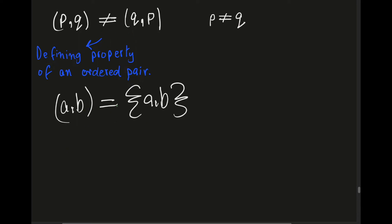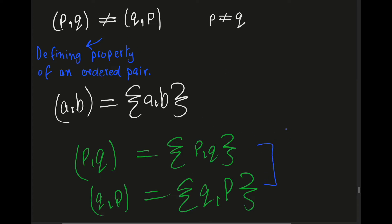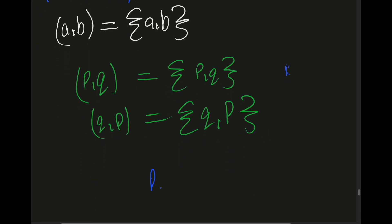We can prove that by substituting p and q into this simpler definition. According to it, (p, q) can be written as one set, and (q, p) would be another set. And you can see that both of these sets are the same, which means the ordered pairs (p, q) and (q, p) are equal to each other.